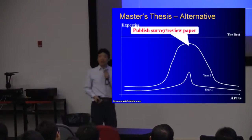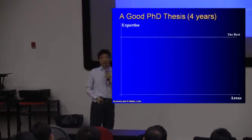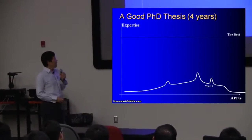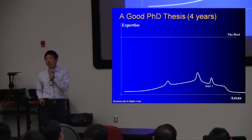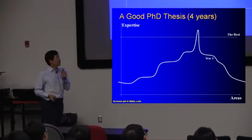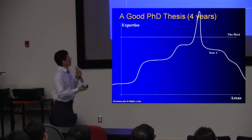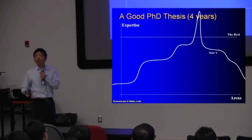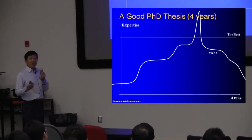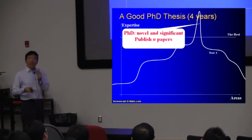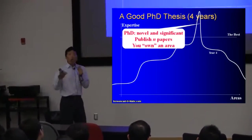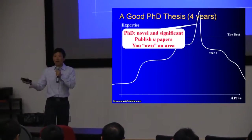For PhD students — and I see many master's students here who want to be PhDs in the future — let's say PhD takes four years. In your first year, you have time to explore several different areas or topics. But then you want to quickly pick one and focus on it. In the third year you push it further up, and in the fourth year you want to really break the ground and establish something new, novel, and significant. This peak that passes through the best represents the novel and significant contributions your thesis is making. You will be publishing perhaps three to five papers, and you can say you own the area — this area is your baby.